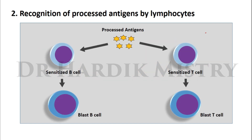The second step is recognition of the processed antigen by lymphocytes. The processed antigen comes in contact with B lymphocytes and T lymphocytes. Lymphocytes in the initial stage of formation are all present in the bone marrow. Those that mature in the bone marrow are known as B lymphocytes. Those that migrate from the bone marrow to the thymus gland for maturation are known as T lymphocytes. Once the processed antigen comes in contact with B and T lymphocytes, they become sensitized B cells and sensitized T cells.